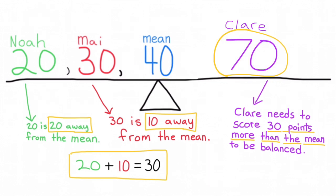In order for the mean to be 40, Claire must have scored 30 points more than 40, which is 70 points. Claire scored 70 points.